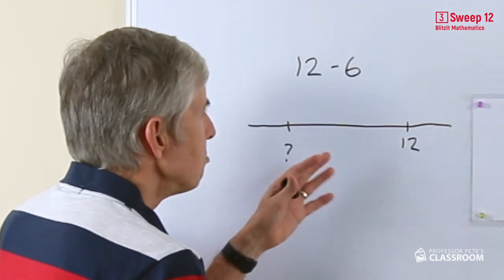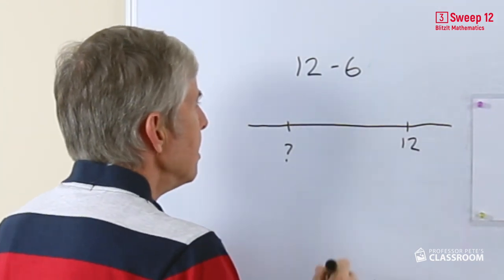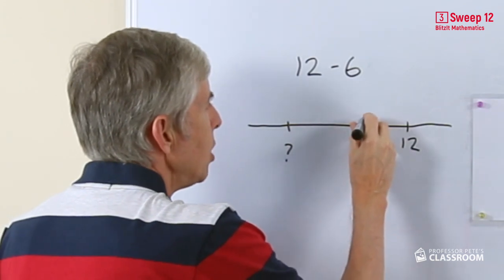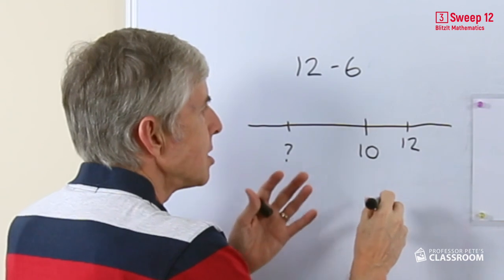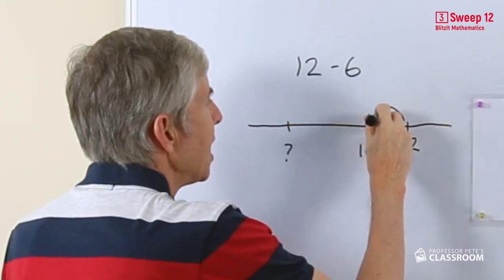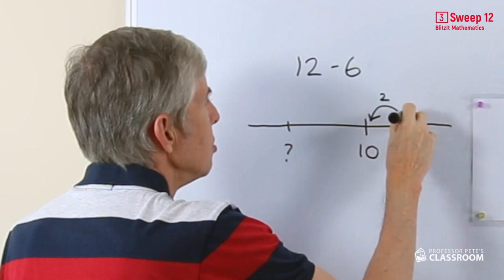So as we often do with an open number line, we look at how far it takes us to get to the nearest 10 or the next 10. So from 12 to 10, how far back is that students? Of course it's 2.